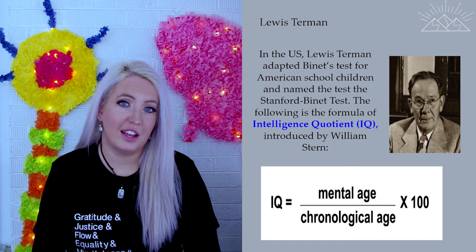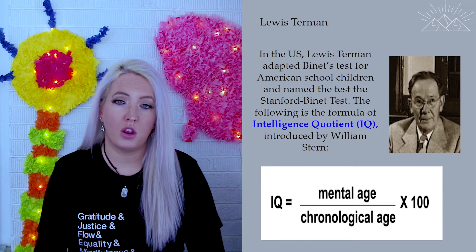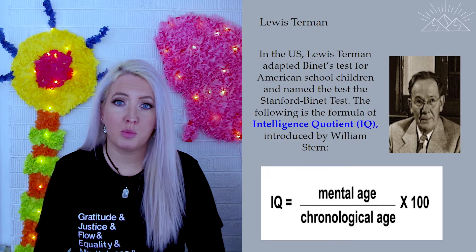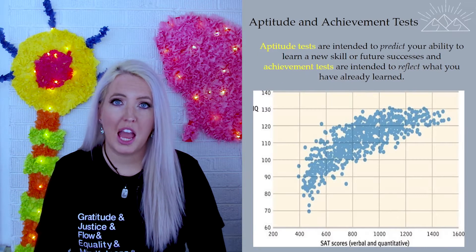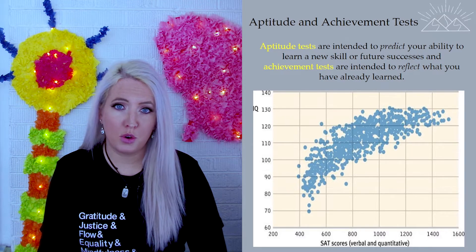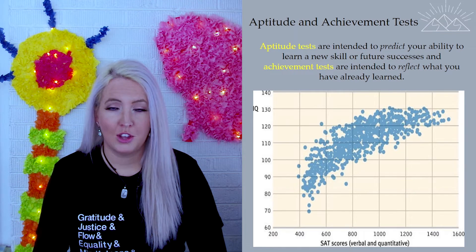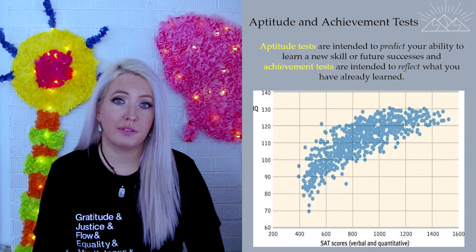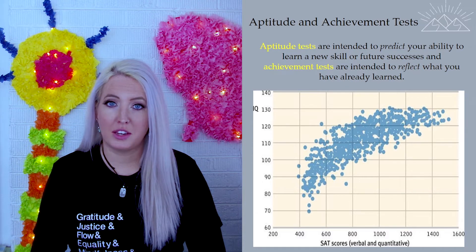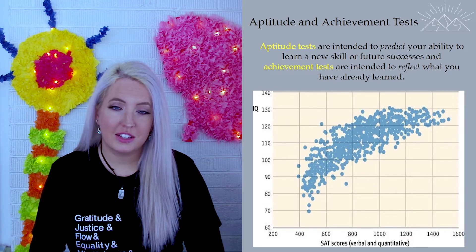Of course, this formula only works with children, so today's IQ tests use a different formula. But the meaning of an IQ score remains about the same. The original IQ test was meant to predict future performance, which we refer to as an aptitude test. Aptitude tests predict future performance, while achievement tests reflect current performance — for example, a class test reflects what you've learned, but the LSAT might predict your future success at law school.